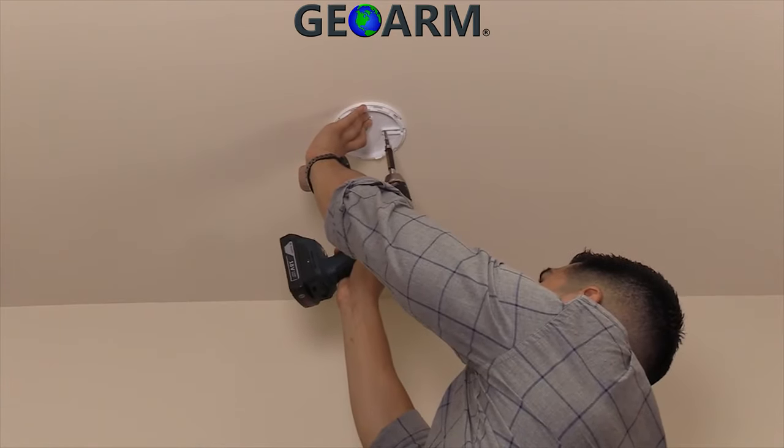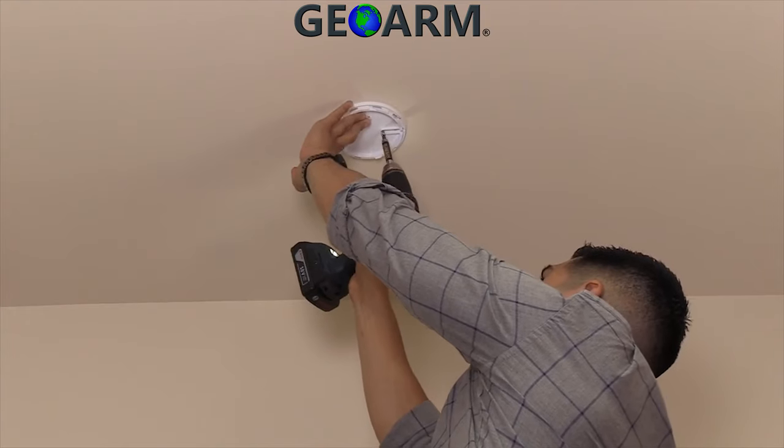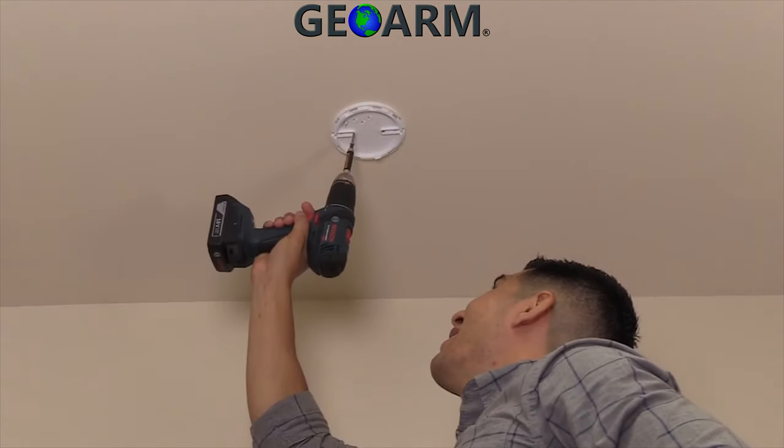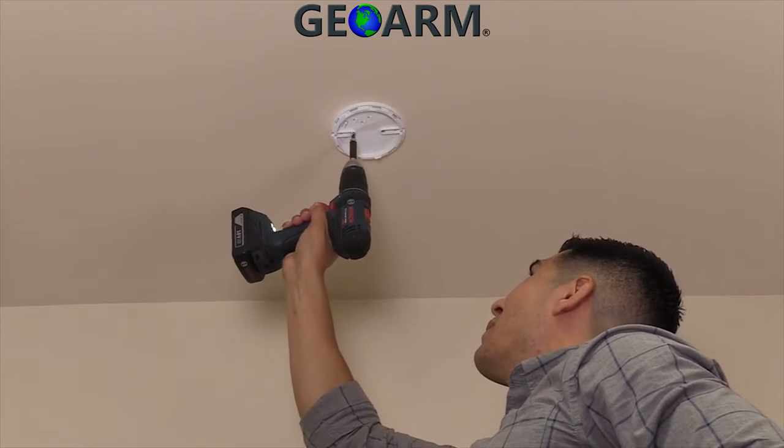drill two pilot holes using the mounting bracket as a guide. For best results, place the holes in the channel on the left and right as close to the center as possible.